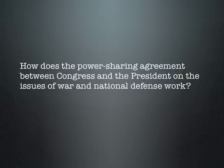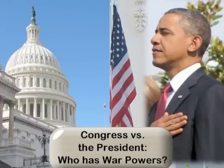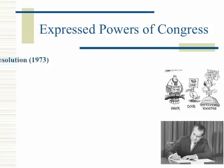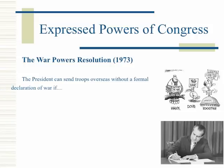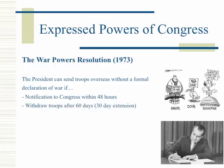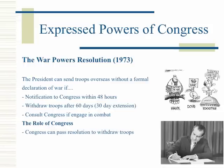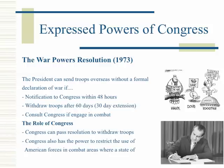How does the power-sharing agreement between Congress and the President on the issues of war and national defense work? Under the War Powers Resolution of 1973, the President can send troops overseas without a formal declaration of war if: notification to Congress is given within 48 hours, troops are withdrawn after 60 days with a 30-day extension, and Congress is consulted if engaged in combat. Congress can pass resolutions to withdraw troops and also has the power to restrict the use of American forces in combat areas where a state of war does not exist.